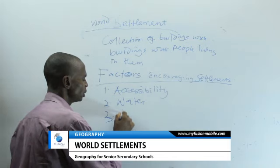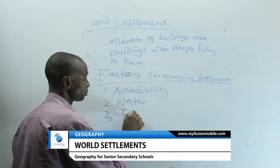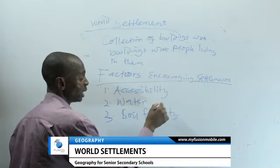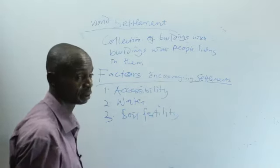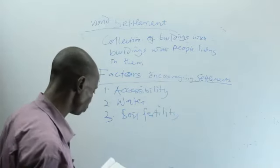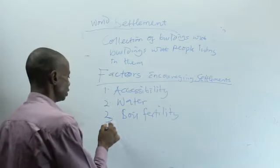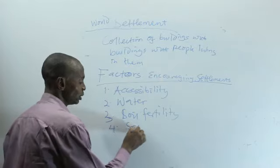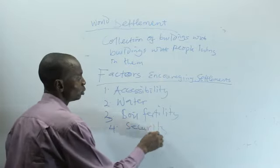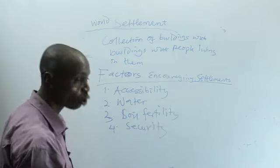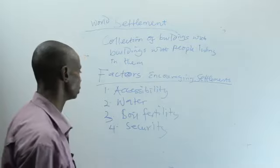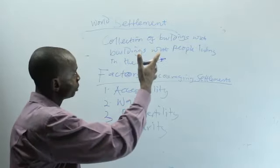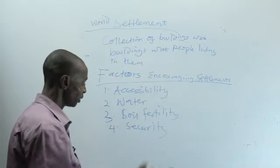Number three, we talk about soil fertility, where people can carry out their farming activities — it can attract people to that place. Then number four, which is very important, is security.